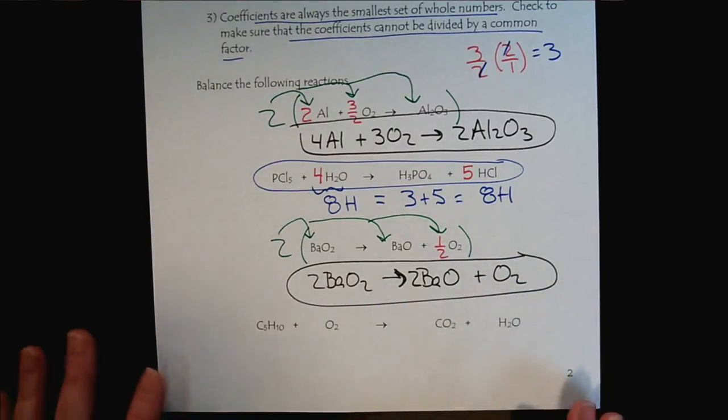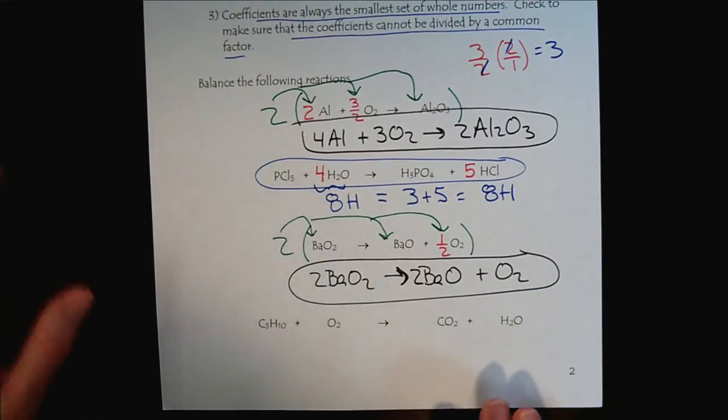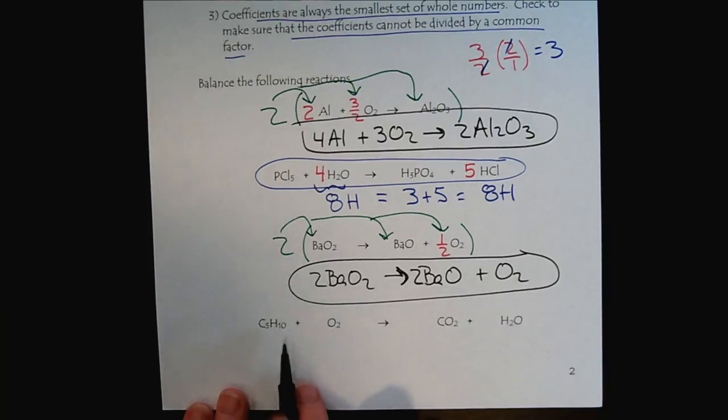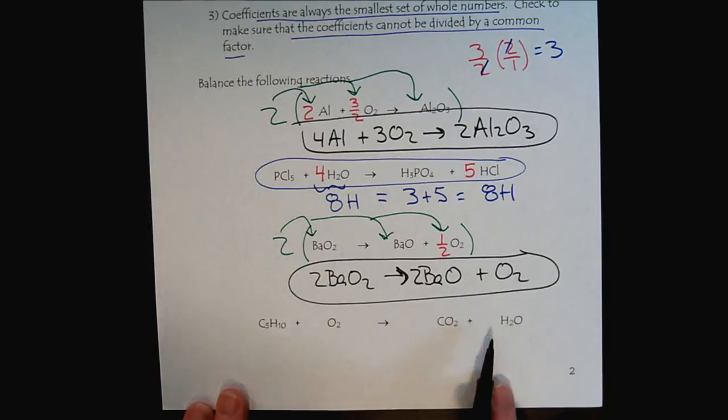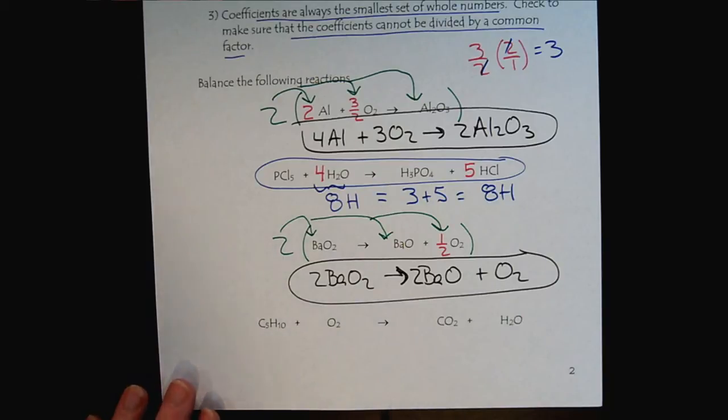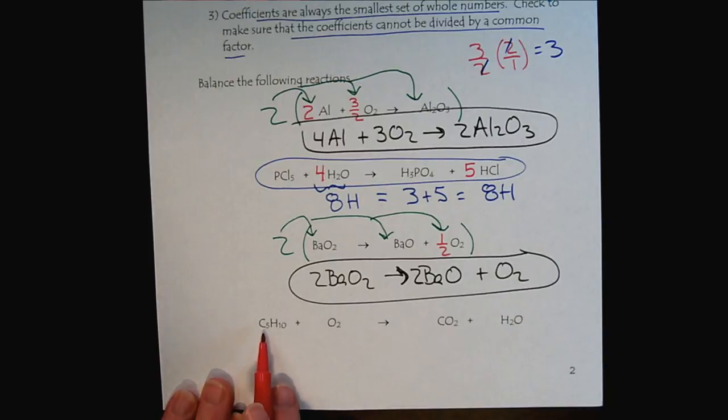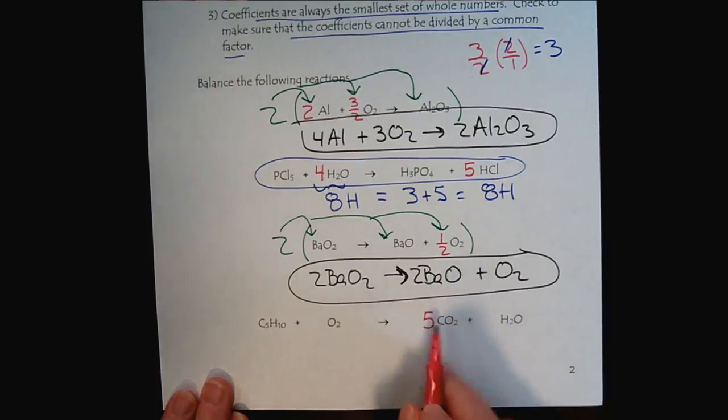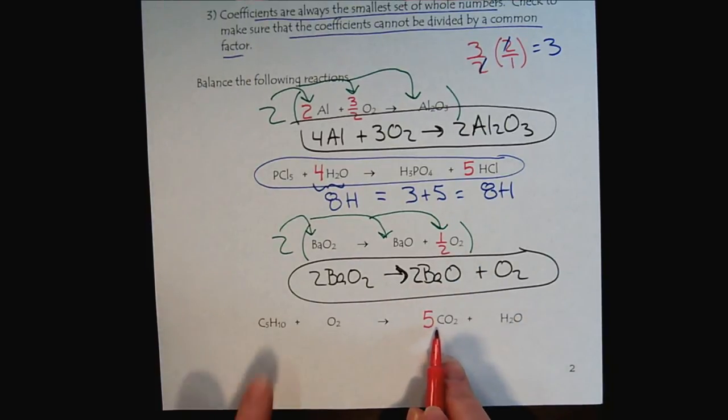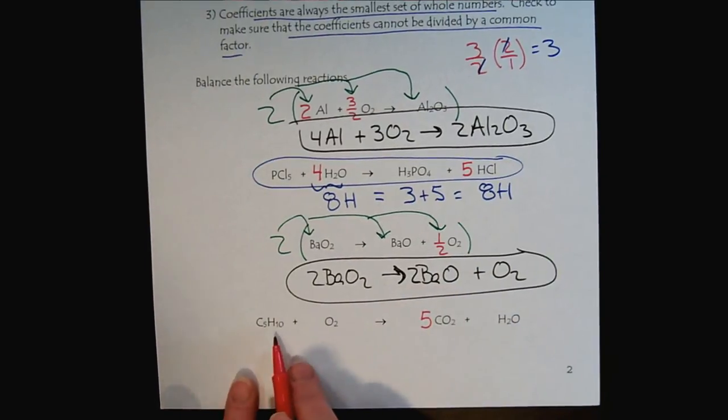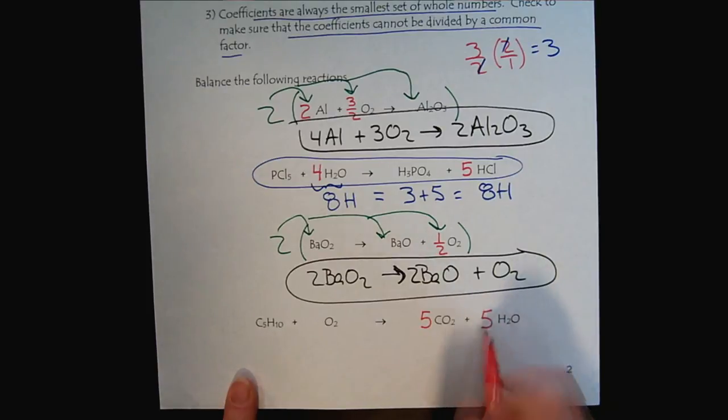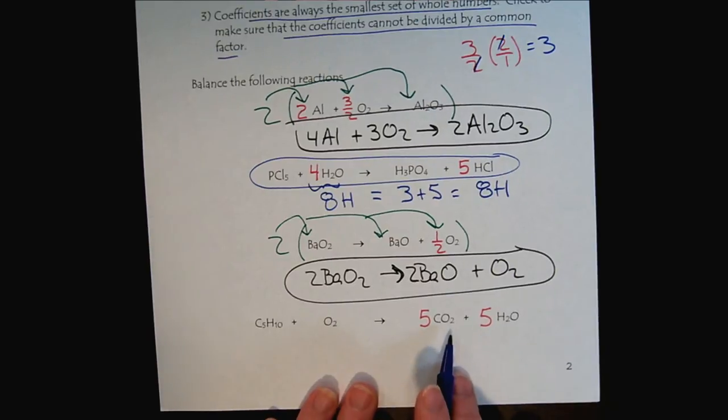There is a separate video tutorial on this reaction. This is a combustion reaction, but I think it's worth taking the time to do one here as well. Remembering with combustion reactions, we want to start with the carbons. So we have five on the left, so we would need five CO2s. And then we have ten hydrogens, so we would need five waters.